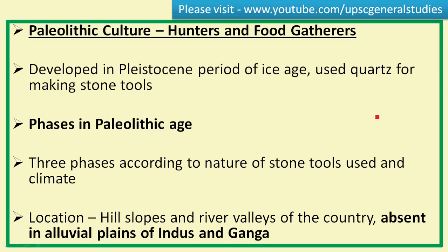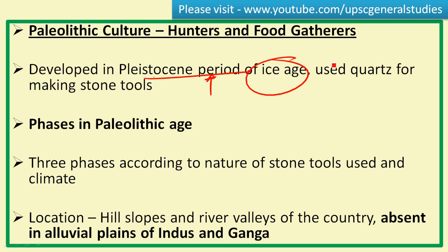Welcome friends. In this video let's continue the Paleolithic culture, also called the Old Stone Age culture. The people in this period were practicing hunting and food gathering, so they are called hunters and food gatherers. This Paleolithic culture started during the Pleistocene period of the ice age, which was discussed in my previous video on the geological time scale of the earth.